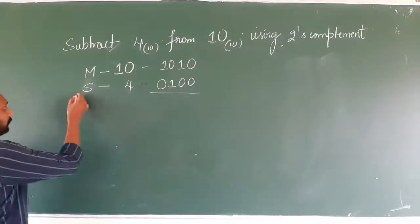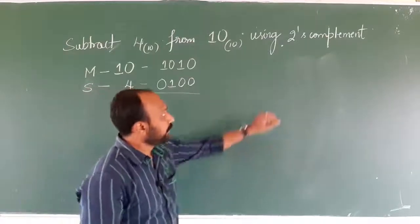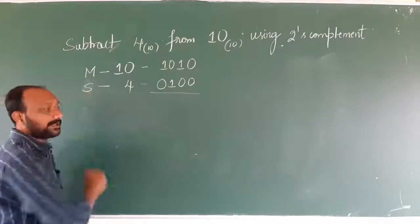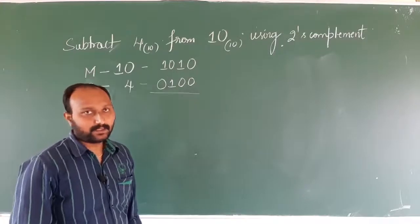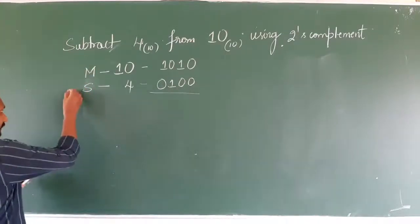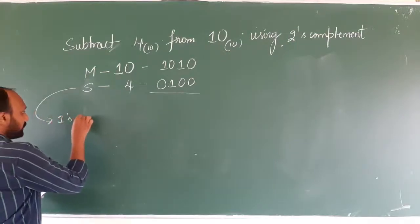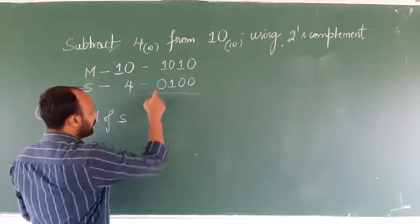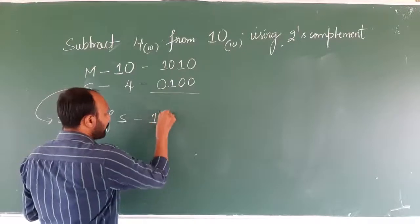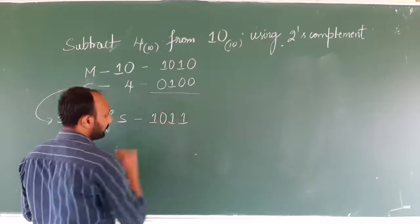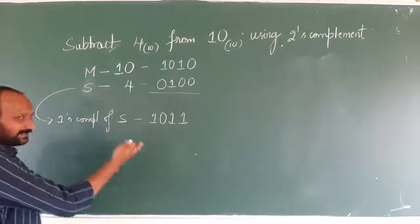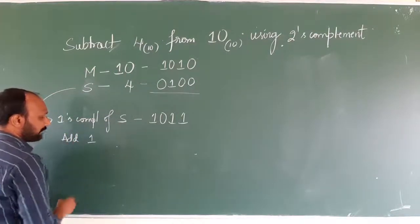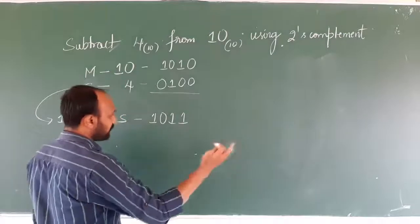Now we need to perform subtraction using two's complement method. That is, we need to find the two's complement of the subtrahend. To find two's complement of the subtrahend, first we need to find the one's complement of the subtrahend. The one's complement is found by converting 0 to 1 and 1 to 0. After finding one's complement, we need to add bit value 1.